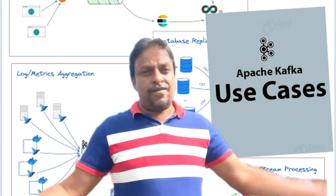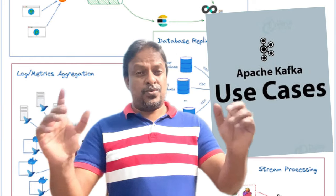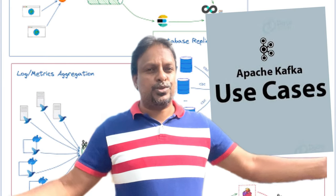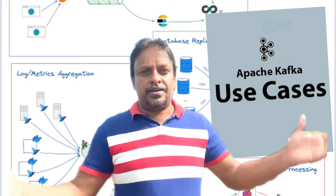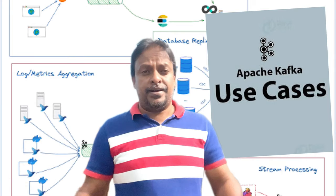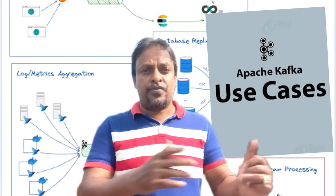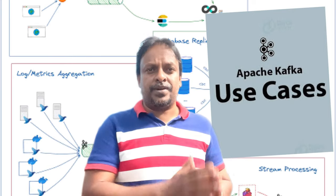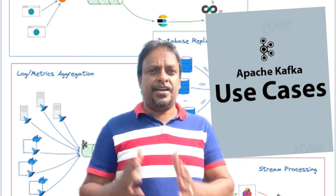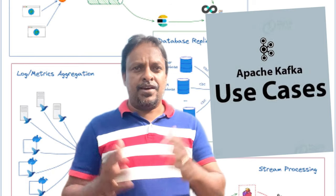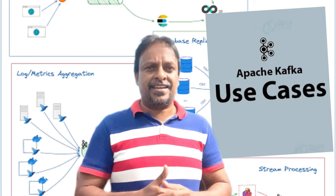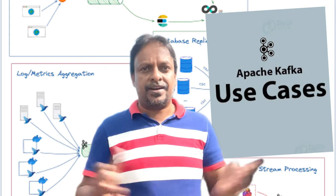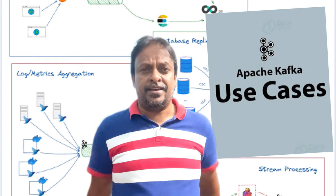Hi techies, welcome to my channel. Today I'm going to talk about the top five Kafka use cases. The first one is data streaming. Using Kafka, we can stream data from different sources into a particular database for analysis, and we can use it for machine learning.